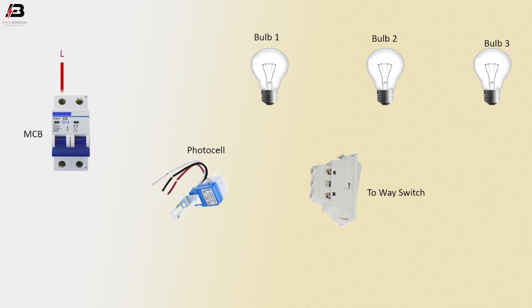Phase connection input to double pole MCB circuit breaker. Phase connection from MCB circuit breaker to connect to switch common terminal. Phase connection from switch L2 terminal to photocell sensor.